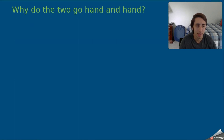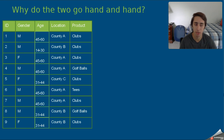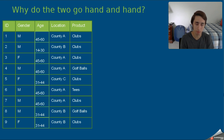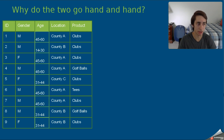Before we jump into setting up our database and learning SQL, I really want to emphasize why the two go hand in hand. On the left here we have a table of information from nine individuals who completed a survey for a golf company online, giving basic details: gender, age, location, and the product they were interested in buying. With this table it's kind of hard to spot trends — the data is neat and structured in columns and rows, but visual trends aren't obvious.